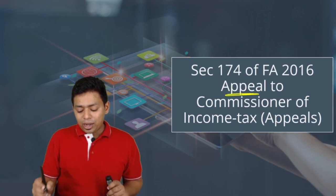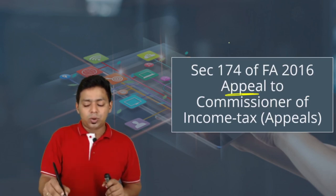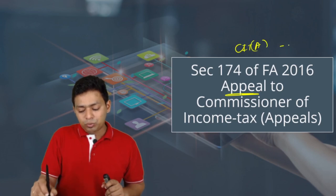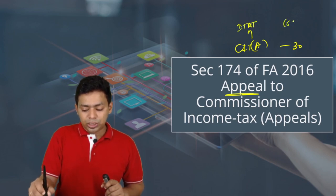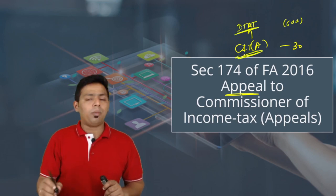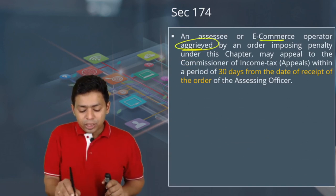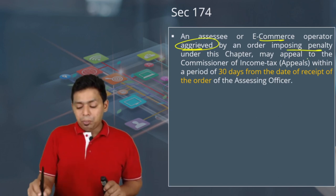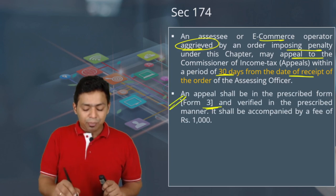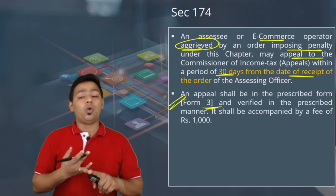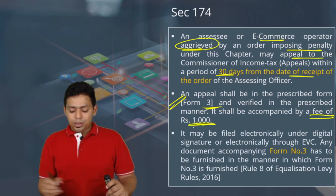Appeals can be filed to CIT(Appeals) — the appellate hierarchy in equalization levy is the same as income tax. The first appeal goes to CIT(A) within 30 days. Then the order of CIT(A) can be challenged before ITAT within 60 days, and thereafter High Court and Supreme Court. An assessee or e-commerce operator aggrieved by the imposition of penalty may appeal to CIT(A) within 30 days of receipt of the AO's order. The appeal form is Form Number 3, accompanied by fees of ₹1,000.